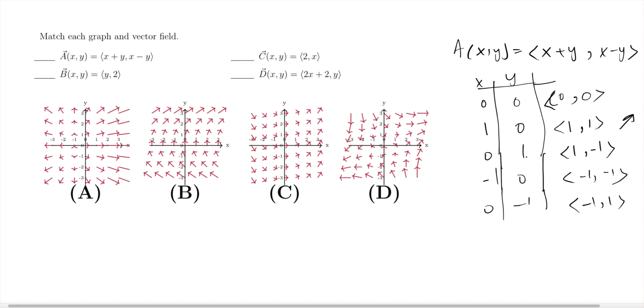At (1,-1), that's the vector that sits on that point. At (1,0) I should have this shape, and at (0,-1) I should have the shape coming down.